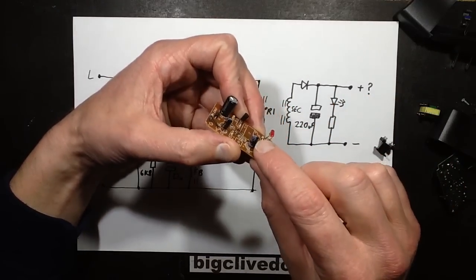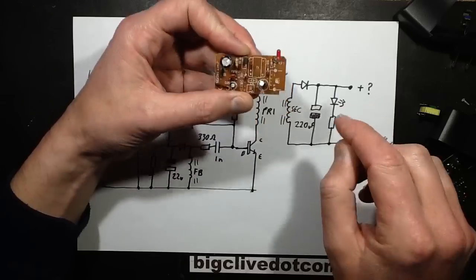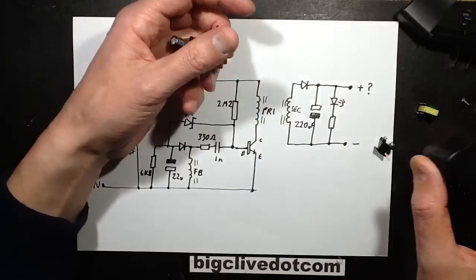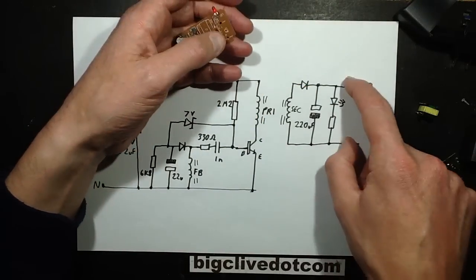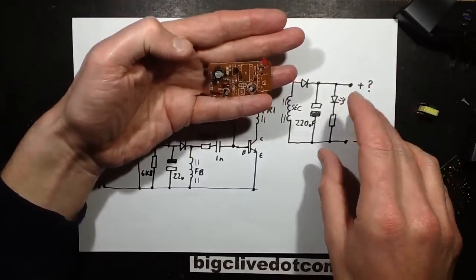There's a 220 microfarad smoothing capacitor and then there's a 1K resistor and an LED just as an output indicator, and also that serves as a hole for the smoke to come out of apparently. And the voltage out is some indeterminate 5 volt-ish type of thing.